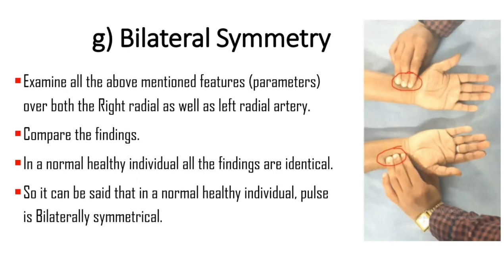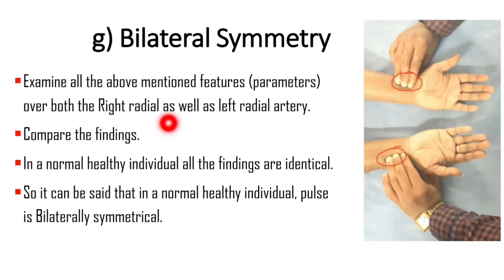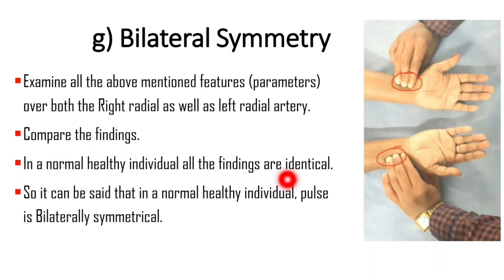The next character is bilateral symmetry. Examine all the above-mentioned parameters over both the right radial and the left radial artery, and compare the findings. In a normal healthy individual, all the findings are identical — it can be said that the pulse bilaterally is symmetrical.